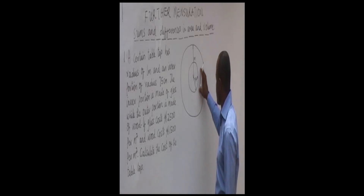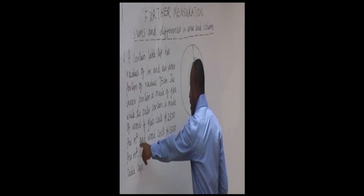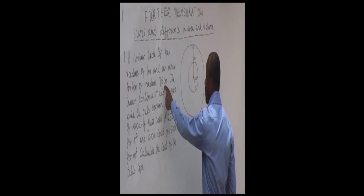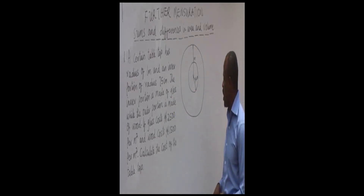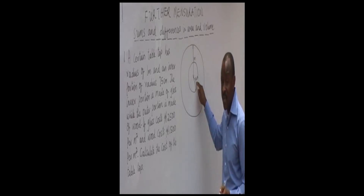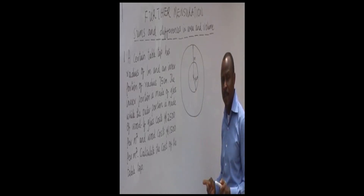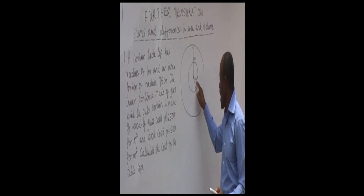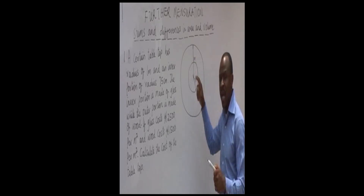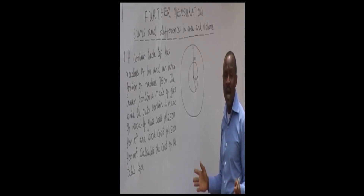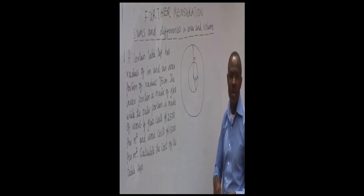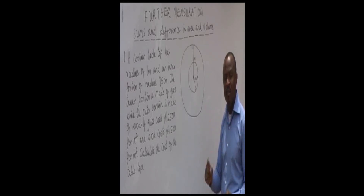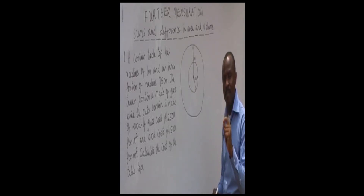Notice that the cost is given per meter squared, but the radius of the inner portion is in centimeters. You must change the centimeters to meters before multiplying. Students often make the mistake of multiplying with mixed units and then trying to convert afterwards — that gives a wrong answer. Before you multiply, make sure all units are the same.